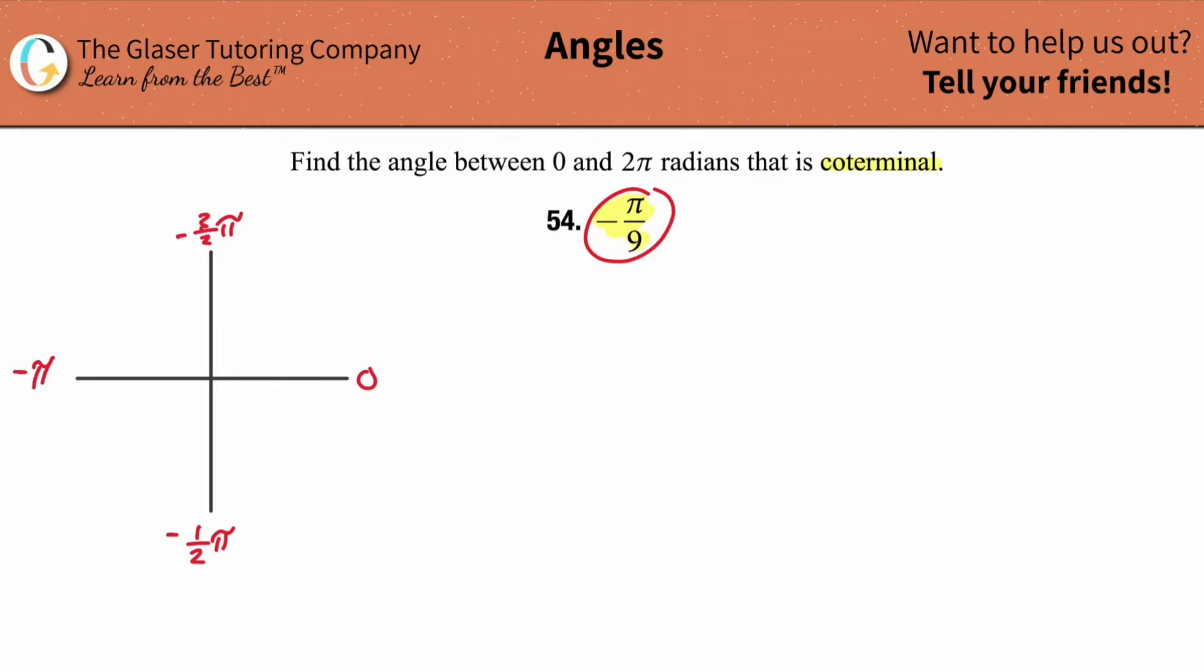Negative π/9, isn't that the same thing as simply saying negative 1/9 π? If you know that this is 0, and then you know that this represents negative 1/2, it sounds to me like negative 1/9 is going to be somewhere about here. It's going to be a very tiny angle in there.